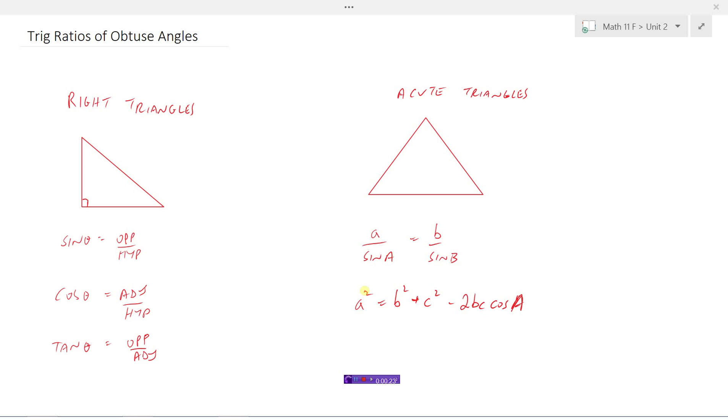Sine theta is opposite over hypotenuse, cosine theta is adjacent over hypotenuse, and tan theta is opposite over adjacent. That's the SOHCAHTOA—maybe that's how you remember those. We've done that kind of thing.